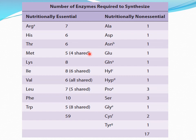This slide shows that lengthy metabolic pathways form the nutritionally essential amino acids. Here we can see that the number of enzymes required by prokaryotic cells to synthesize the nutritionally essential amino acids is large relative to the number of enzymes required to synthesize the nutritionally non-essential amino acids.